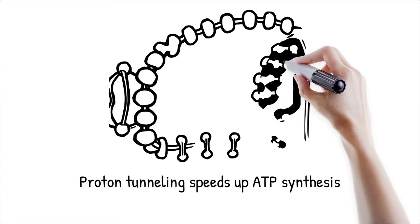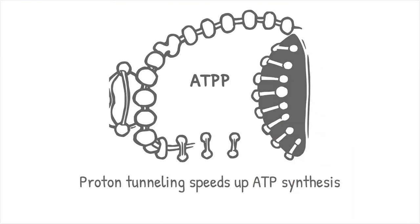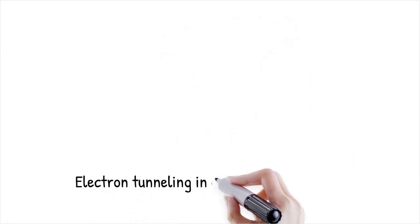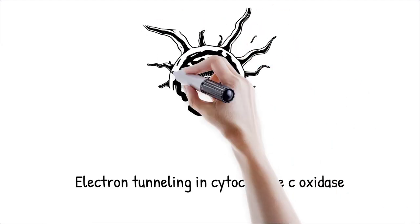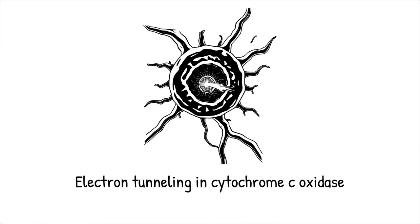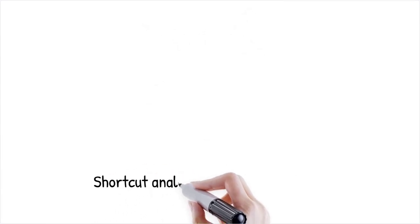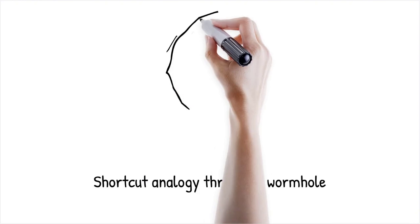For example, in cytochrome C oxidase, electron tunneling is responsible for rapid charge transport in the mitochondrial electron transport chain. It's like using a shortcut through a wormhole instead of taking a long space journey, reducing effort and time.